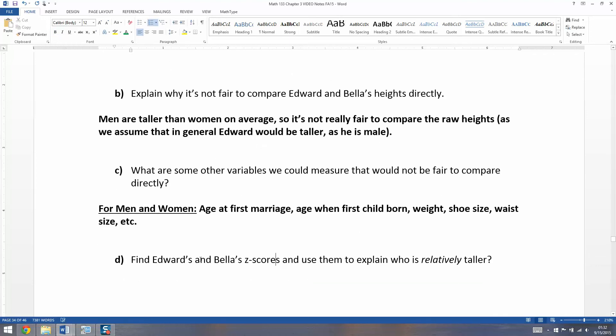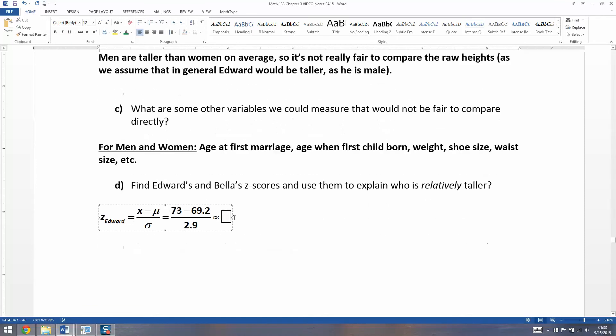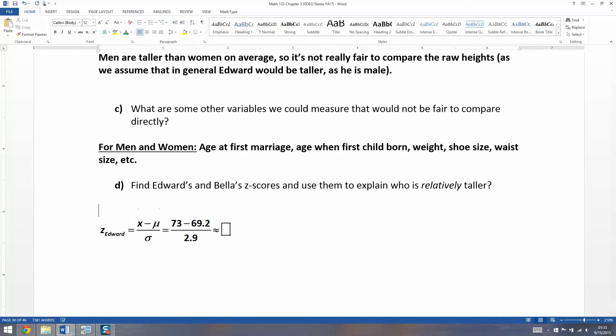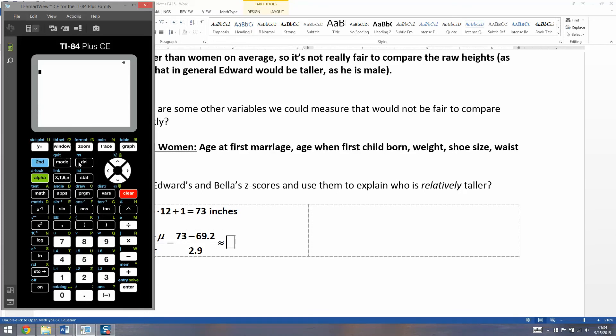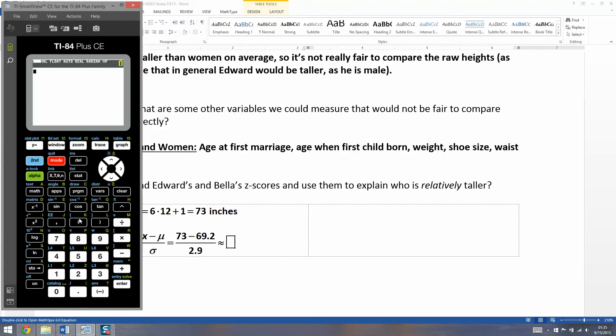Now we're going to find Edward and Bella's Z-scores and use them to explain who is relatively taller. Edward's Z-score: first, his height is 73 inches. I get that by multiplying 6 times 12, because he's 6 feet tall and there are 12 inches in a foot, plus 1. So 73 minus 69.2 divided by 2.9. Using parentheses to preserve order of operations: (73 - 69.2) / 2.9, and you get 1.31.